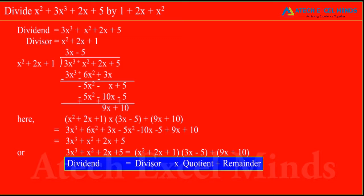Degree of 9x plus 10 is less than degree of divisor x square plus 2x plus 1. Hence, we can't continue division any further. 9x plus 10 becomes remainder. That means, x square plus 2x plus 1 into 3x minus 5 plus 9x plus 10 gives dividend 3x cube plus x square plus 2x plus 5.